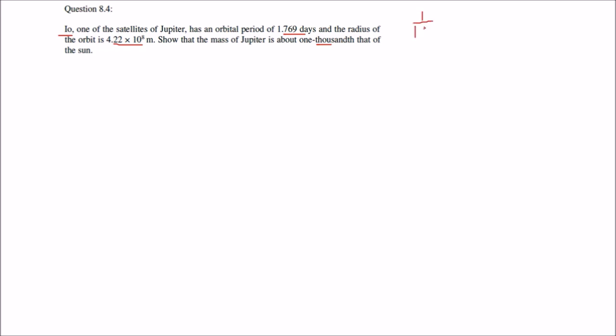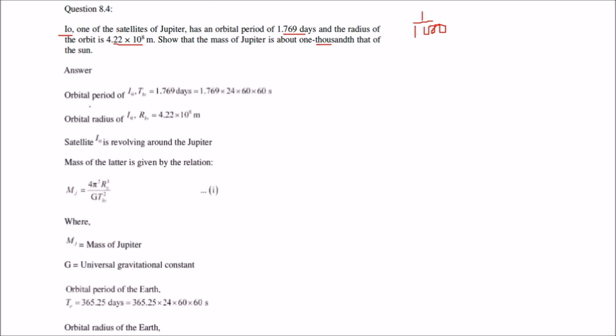Yeh ek satellite hai Jupiter ka, jiska orbital period karib itne din diya hua hai aur jo radius hai orbit ka woh takreeban itna diya hai. Aapko batana hai ki jo mass hai Jupiter ka, kya woh 1/1000 times hai jo sun ka hai? Mass sun ka ek hazaar times mass of Jupiter ke barabar? Toh orbital period I.O — jo bhi diya hua hai sawaal par — hum isko time le lete hain kyunki orbital period matlab T, T jo iska hai woh 1.769 days hai.